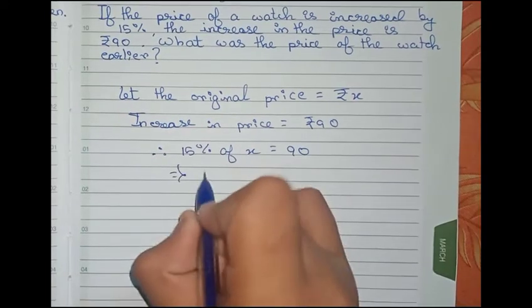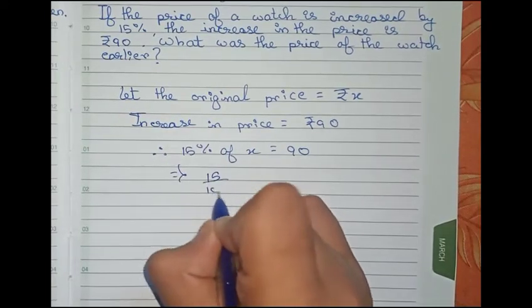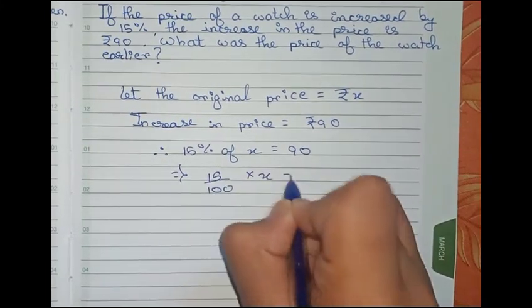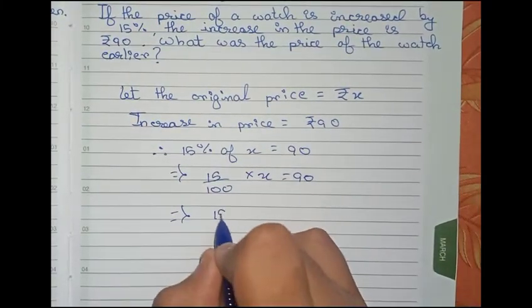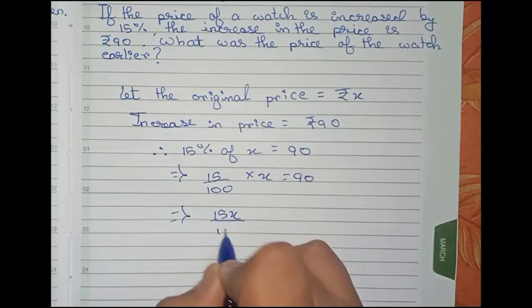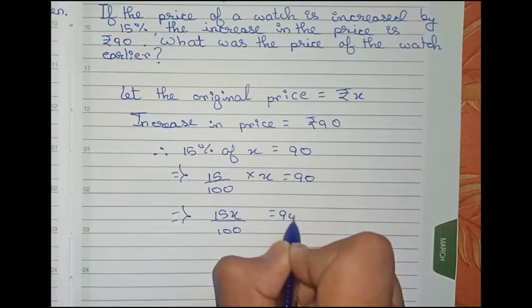So 15 percent we can write as 15 by 100 into x equals to 90. Or we can write 15x by 100 equals to 90.